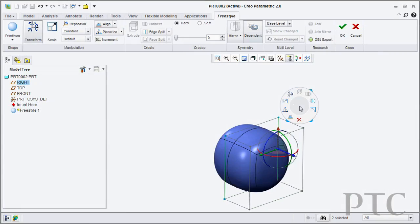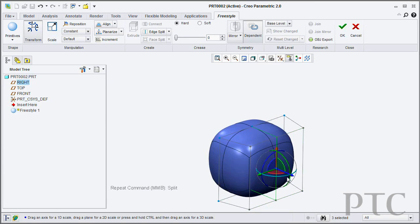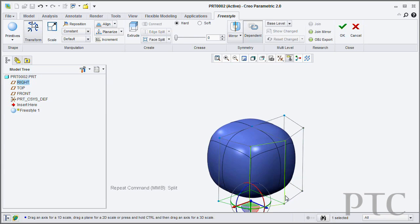It works based upon technology called subdivisional modeling. You start with a primitive shape: a sphere, a cube, a plane. This primitive shape contains a control mesh that surrounds it. This control mesh is what you use to manipulate your geometry.